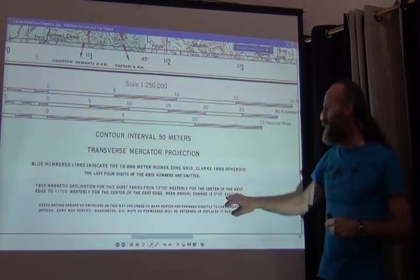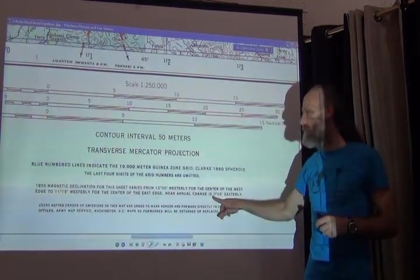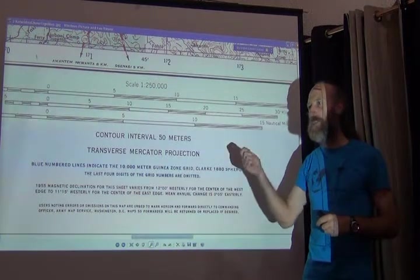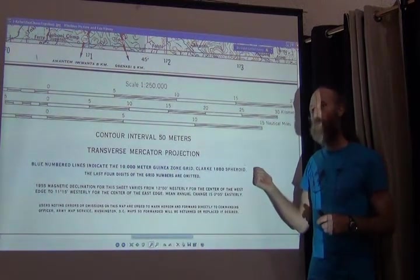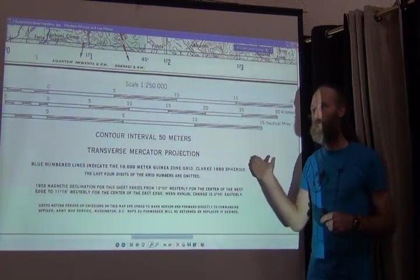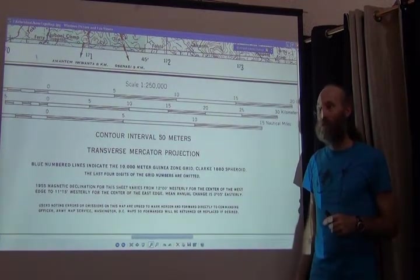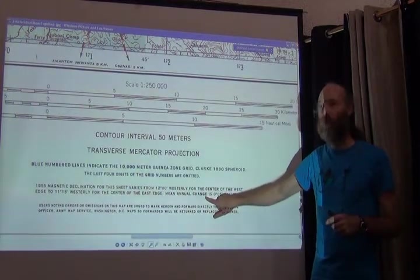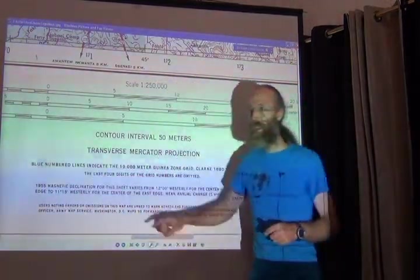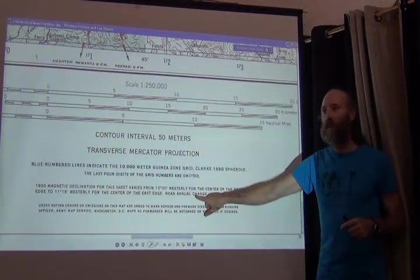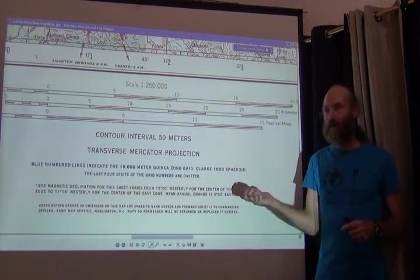The map also gives information about the difference between true north and magnetic north at a particular time. That's only important if you're out in the field using a compass — the compass gives you a magnetic north reading, but the map remains at true north. There's a relationship between those two norths and you need to know that difference. Interestingly, magnetic north changes over time — it actually moves — and this tells you how it moves in this particular location. Their point of reference was 1955, so any time thereafter you need to calculate where magnetic north is based on the information given here.